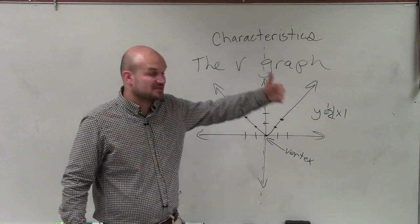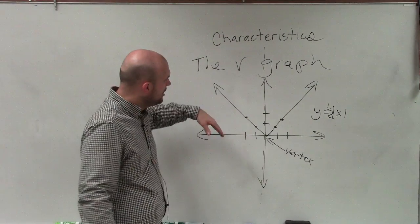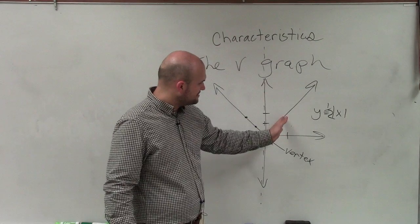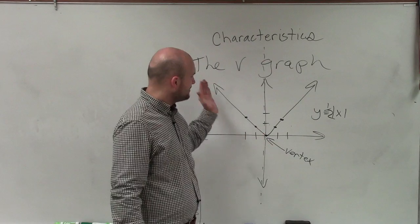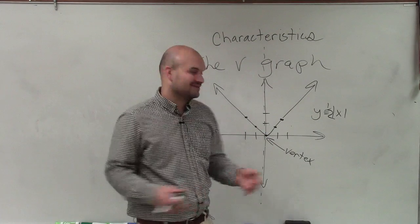is because when we go ahead and graph, or especially when we're using a table of values, all we need to do is if we just pick these points, I can reflect those two points over the axis of symmetry to plot the other two points so that I can go ahead and graph.